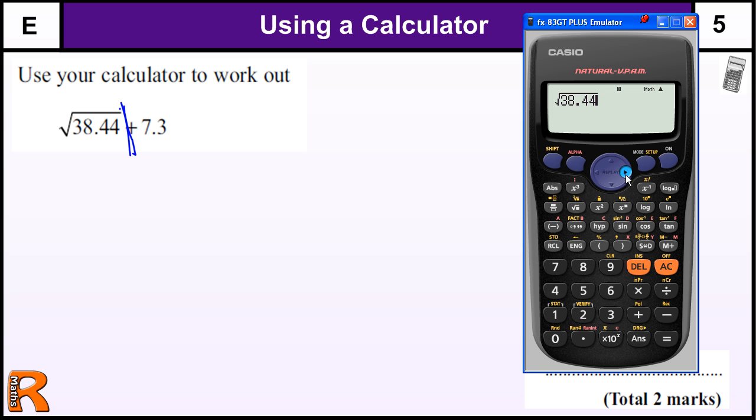What you need to do is come out of the square root by using your arrow button on the calculator, then plus 7.3. There you can see it looks exactly the same as the problem.